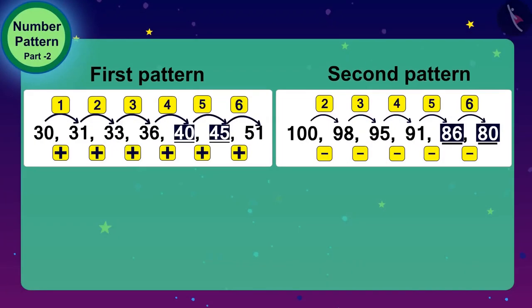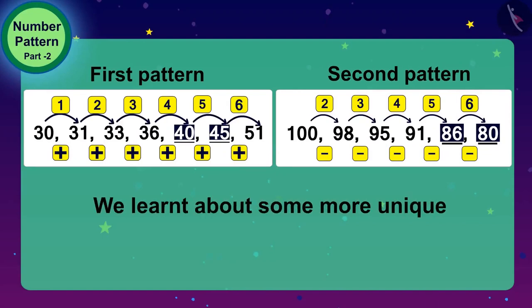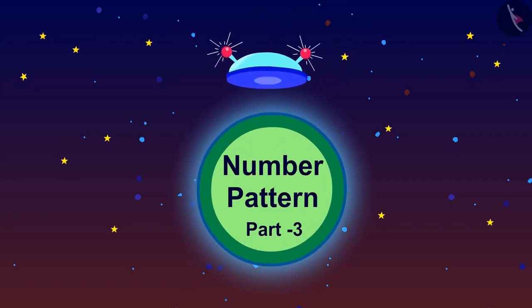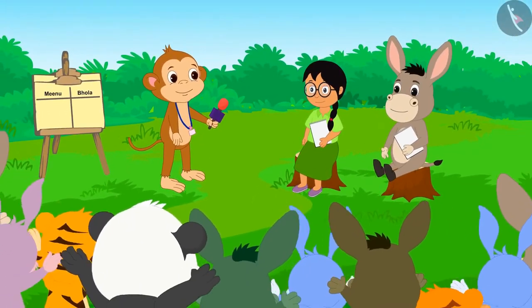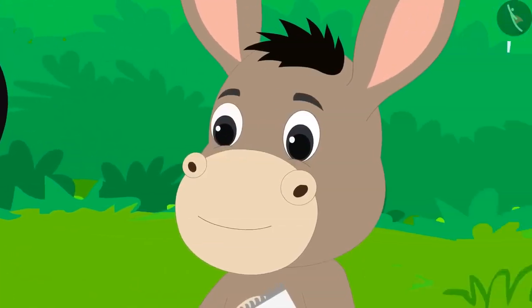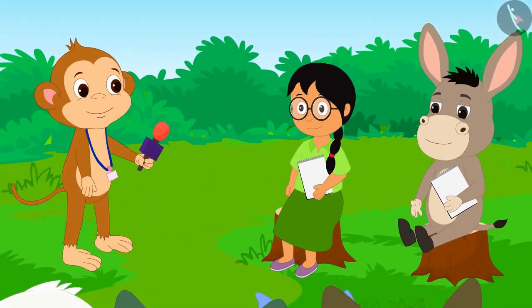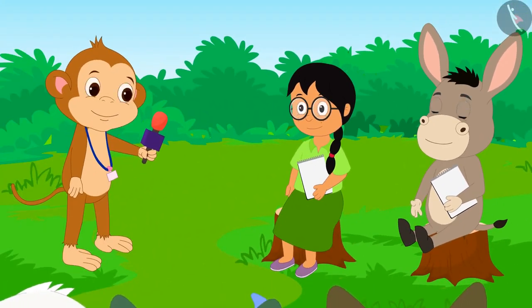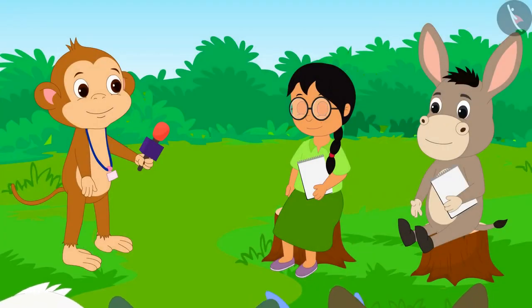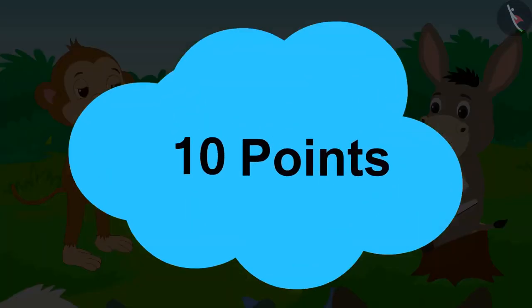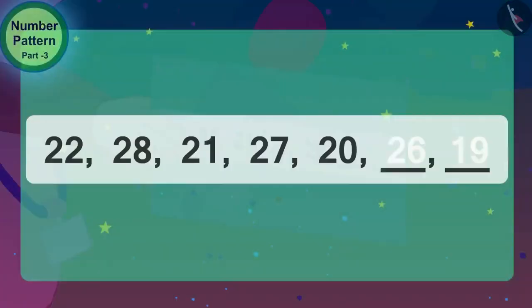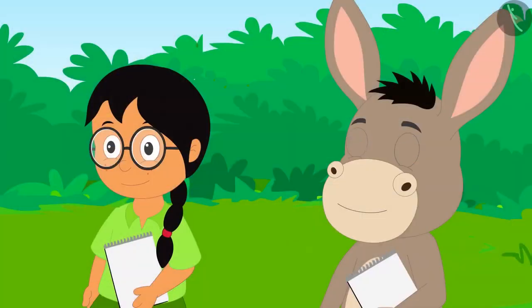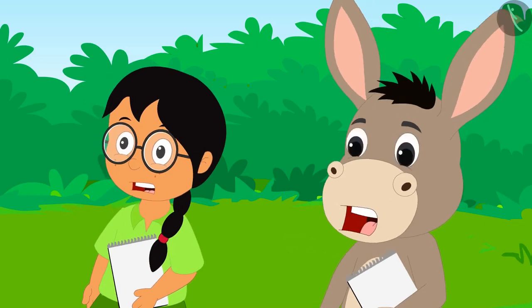Hello children! In the last video, we learned about some unique number patterns. In this video, we will learn to make number patterns using some more mathematical operations. Today, a unique game is being played in Champapur. Meenu and Bola have taken part in this game. Both of them have to complete the number pattern. The one who completes it correctly first will get 10 points. The game's organizer Babban showed them both these number patterns.